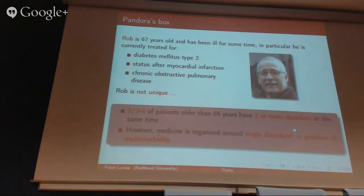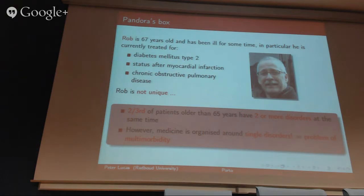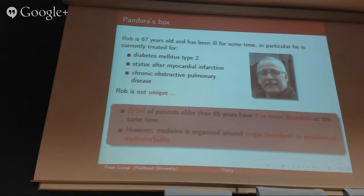Let's move to the problem — it's a modern version of Pandora's box. Consider this patient: his name is Rob, 67 years old. He's been ill for a long while and is treated for three different diseases: type 2 diabetes, myocardial infarction, and chronic obstructive pulmonary disease. If you look at the statistics, two-thirds of patients 65 years and older very often have two or more diseases at the same time.